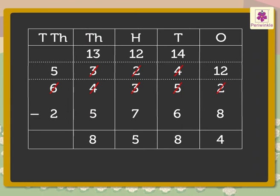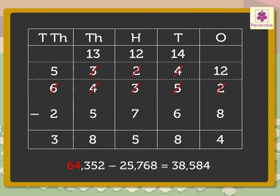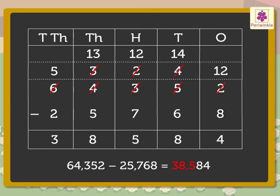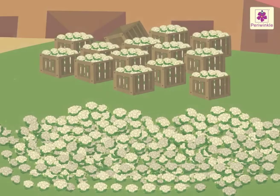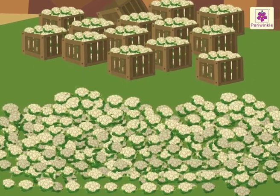Lastly, subtract the ten thousands. That is, 5 minus 2 is equal to 3. Thus, 64,352 minus 25,768 is equal to 38,584. So, 38,584 cauliflowers are yet to be packed. Let us start packing for the delivery.